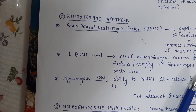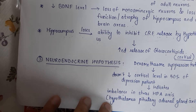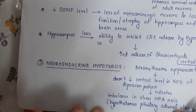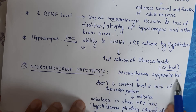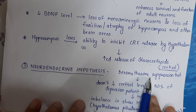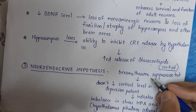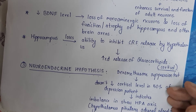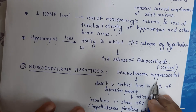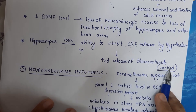The third pathophysiologic hypothesis is the neuroendocrine hypothesis. There is a test called the dexamethasone suppression test. Dexamethasone is actually a glucocorticoid. When this test is done, the result expected is that cortisol should be suppressed.